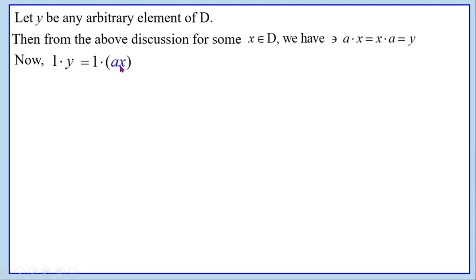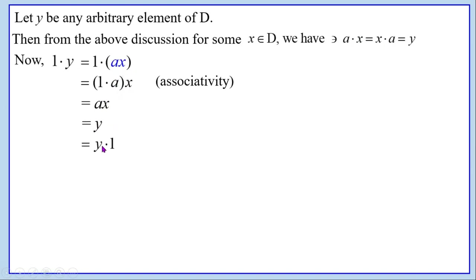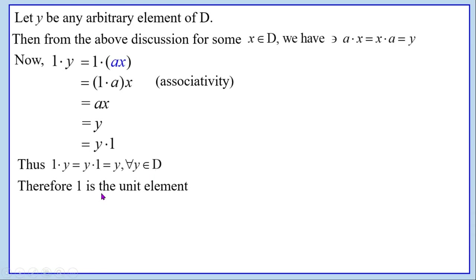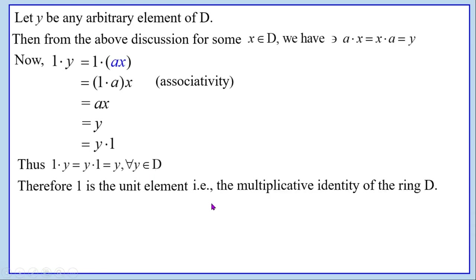Then 1·y = 1·(a·x). By associativity, this equals (1·a)·x = a·x = y. Similarly y·1 = y. Therefore 1·y = y·1 = y for all y in D. Since y is an arbitrary element of D, 1 is the multiplicative identity of the ring D.